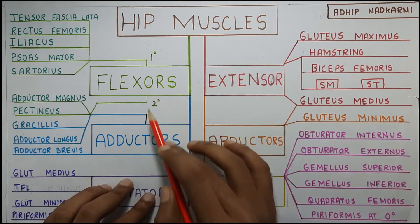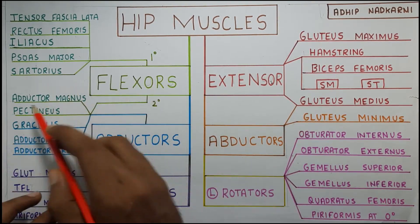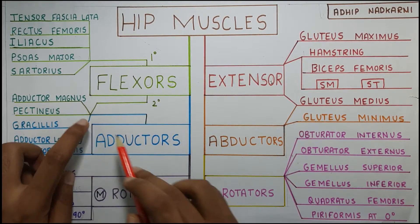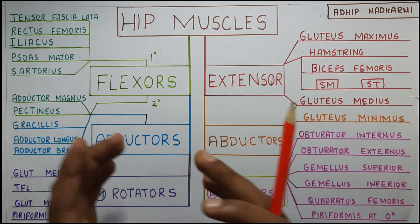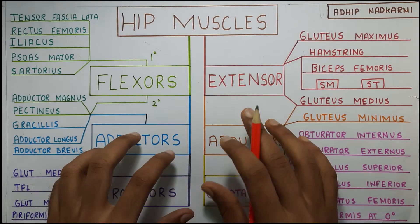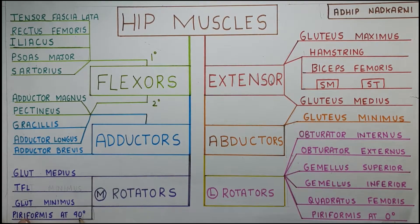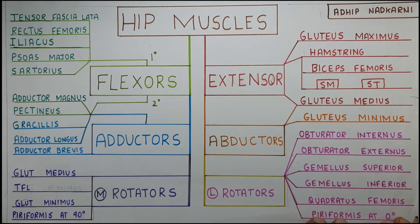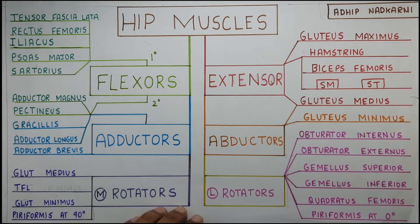For example, flexors and adductors kind of coincide here. If you take adductor magnus — it does adduction, but sometimes depending upon the hip position it can also do flexion of the hip. Another example is the piriformis muscle. Piriformis does medial rotation at the hip joint when the hip joint is at 90 degrees, but when the hip joint is at 0 degrees — that is when there is no flexion — the same piriformis muscle will cause lateral rotation at the hip joint.